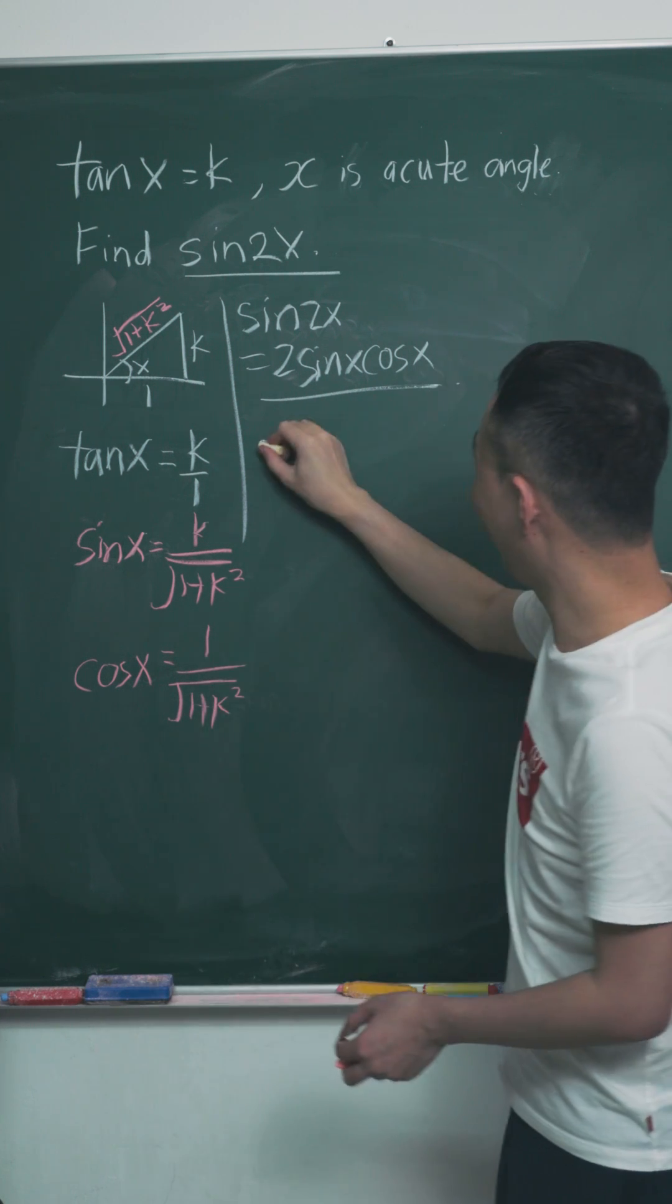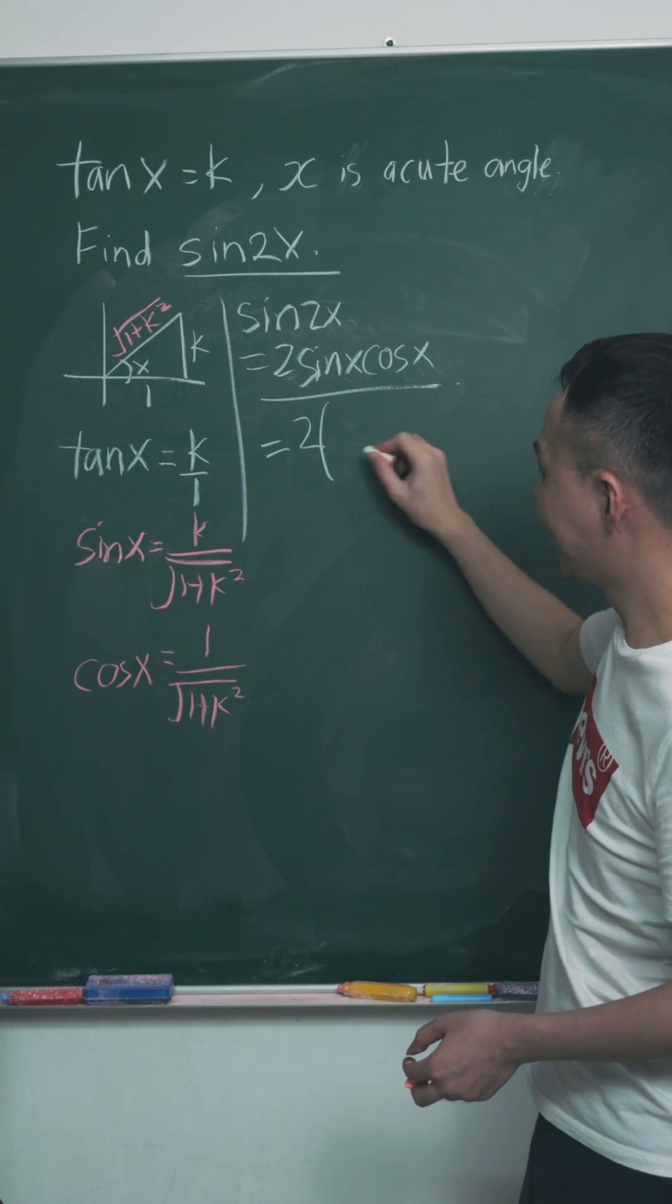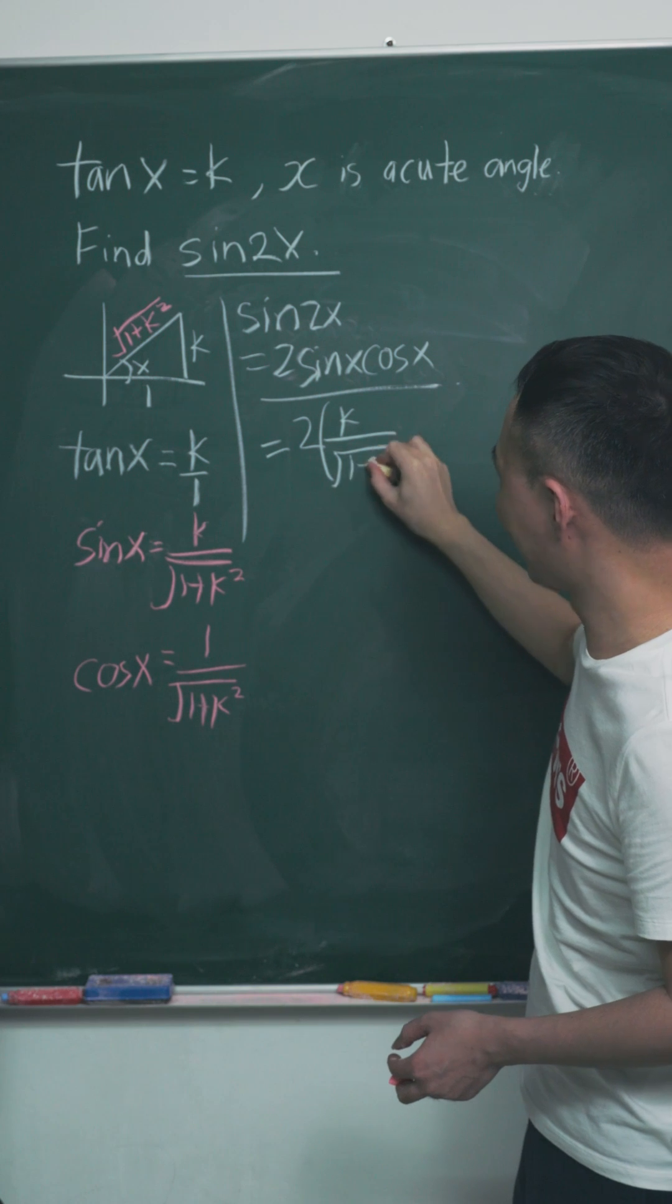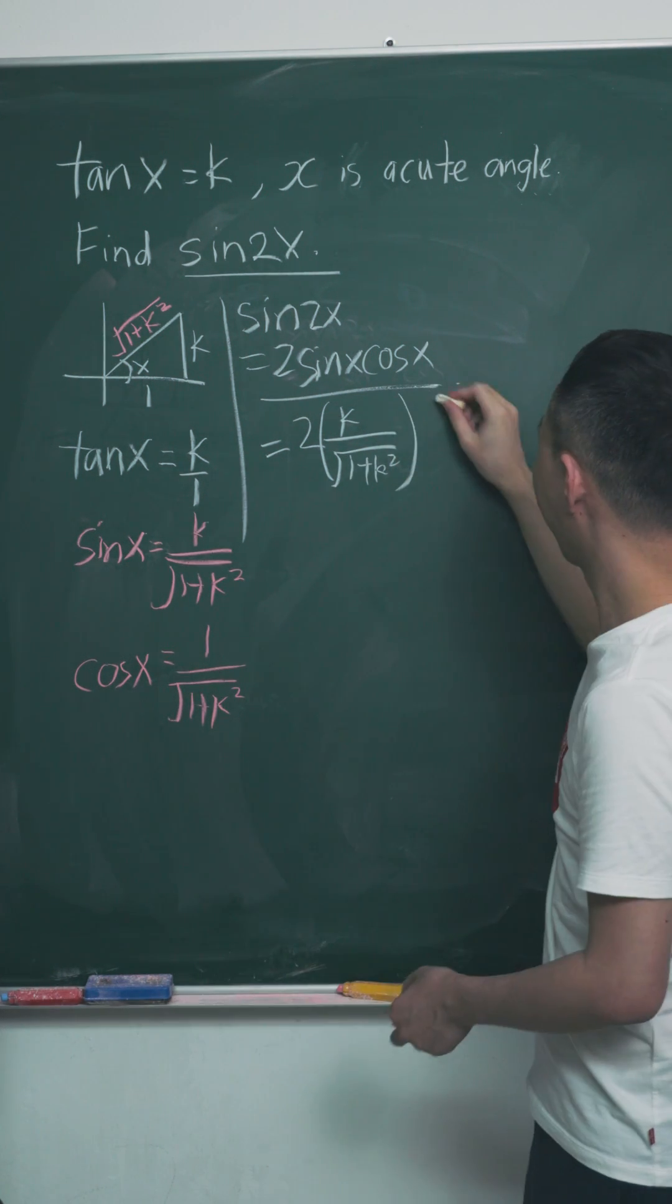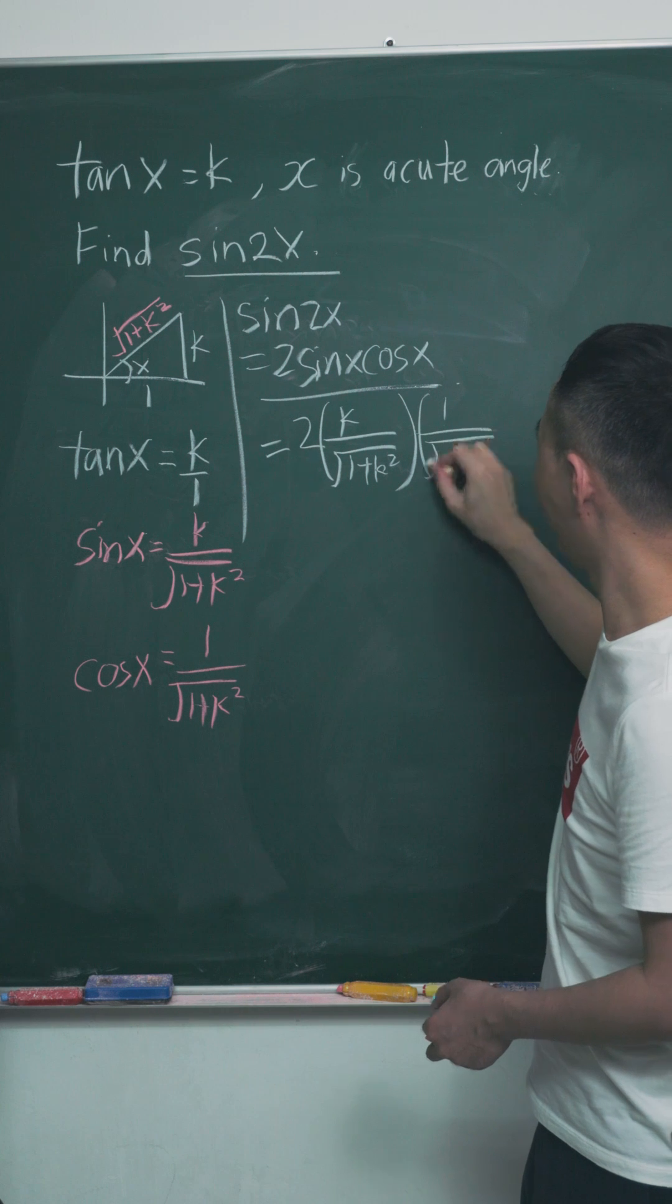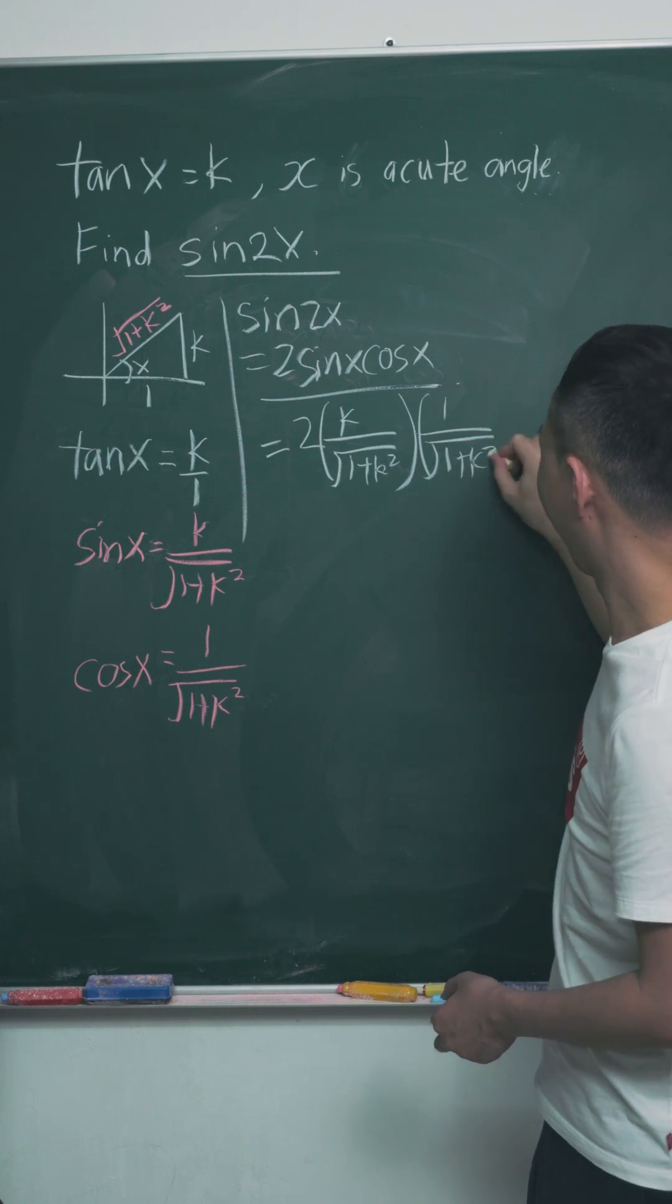So this is what I have. I have 2 times sine, which will be k over square root 1 plus k squared, multiplied by cos, which will be 1 over square root 1 plus k squared.